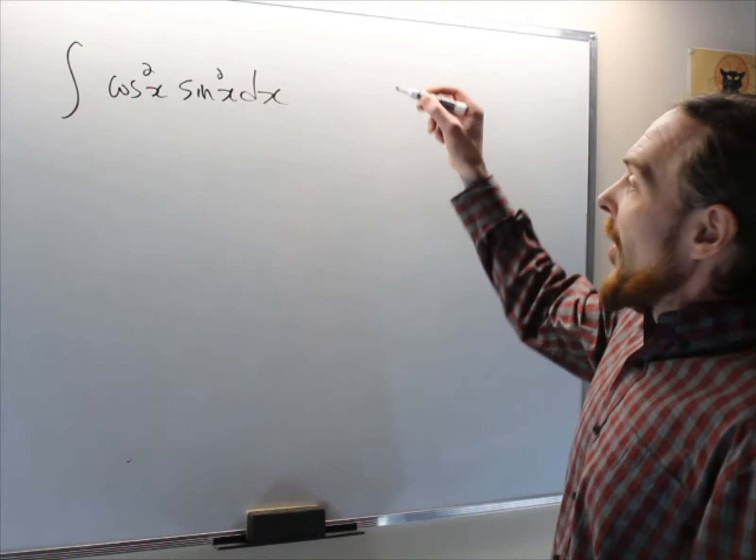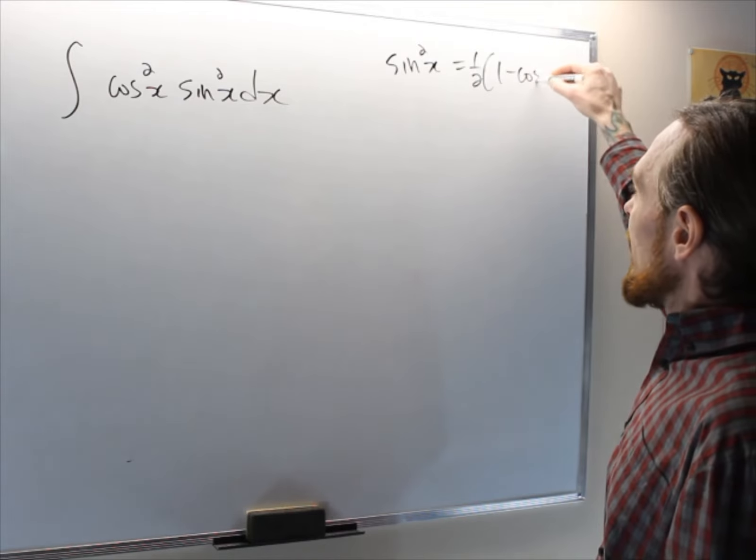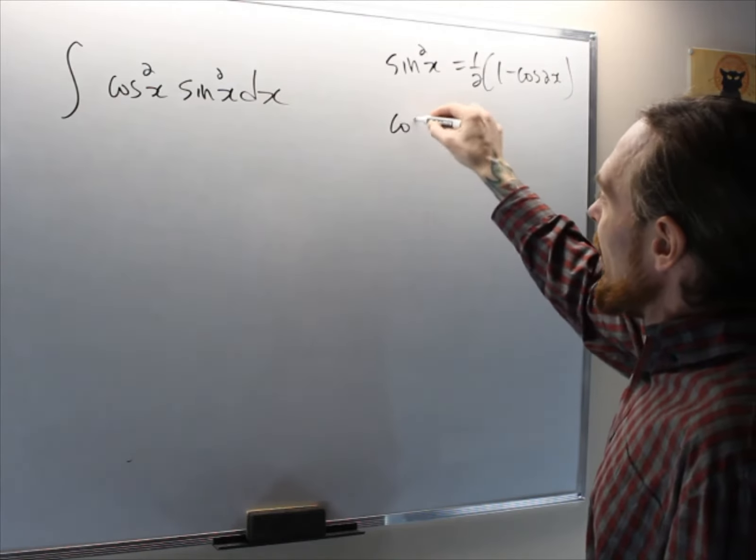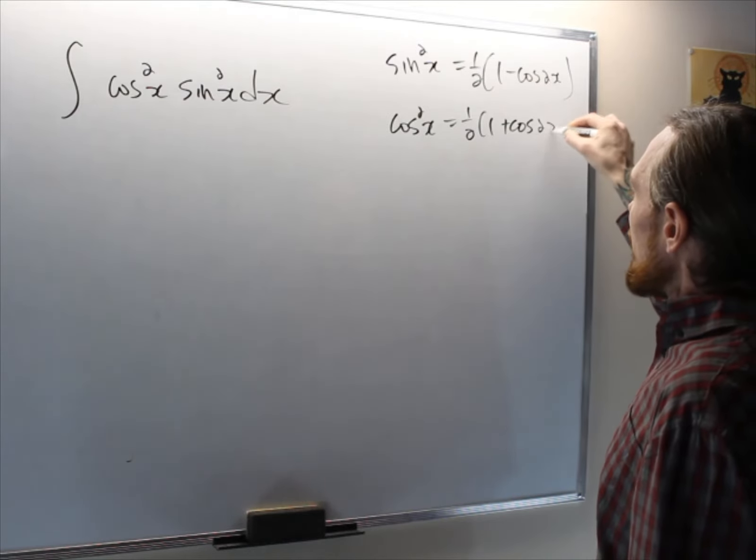So what we're going to use is the fact that sine squared x equals 1 half 1 minus cos 2x, and cos squared x equals 1 half 1 plus cos 2x.